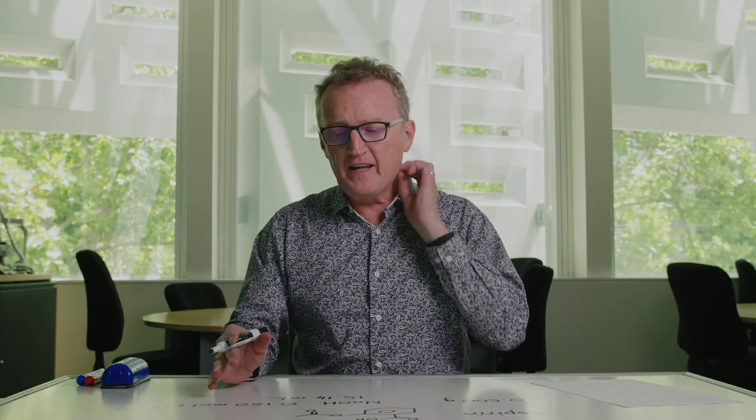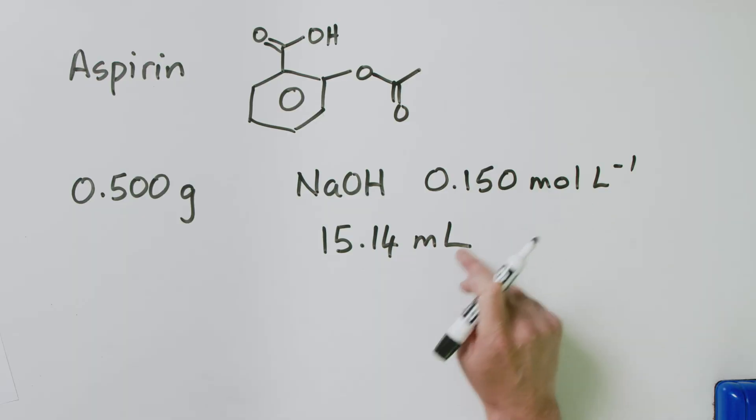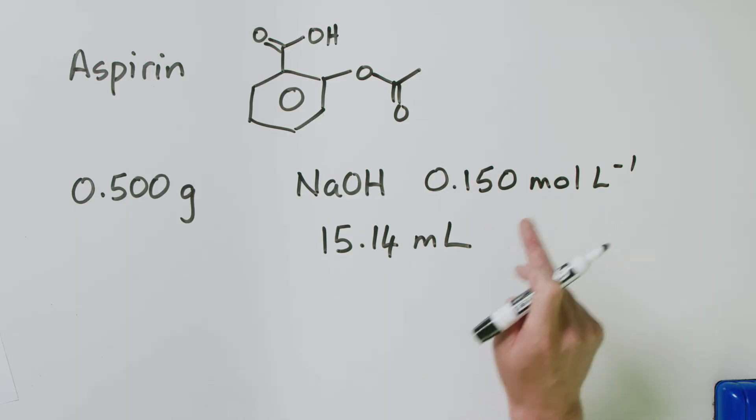So here's our sodium hydroxide. The concentration of our sodium hydroxide is 0.150 mole per liter. And the volume that we find when we do the titration of our sodium hydroxide against our aspirin solution is 15.14 milliliters. The question then becomes, how much aspirin is in our tablet? What's the mass percent of aspirin in our tablet? So how do we do that? This is a little bit different from your typical sort of titration type question. But again, you're given very similar data to any data that you would be given in a titration question. You're given a concentration and you're given a volume. And as soon as you're given a concentration and a volume, what can you get? You can get a number of moles.